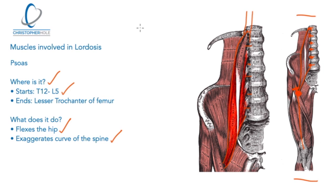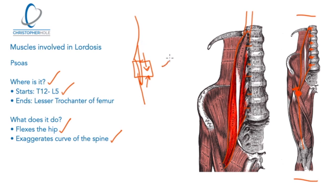Looking at it from a side view, we want a natural S-curve in that part of the spine. With the pelvis and the femur coming off it, when this muscle becomes tight and gets closer together, it creates an exaggerated curve at the lumbar spine. This is the major muscle of lordosis because it's creating that hyper-lordotic curve. So muscle number one is the psoas.